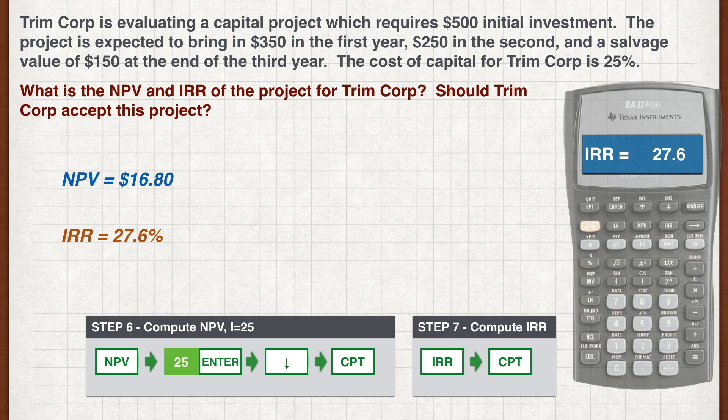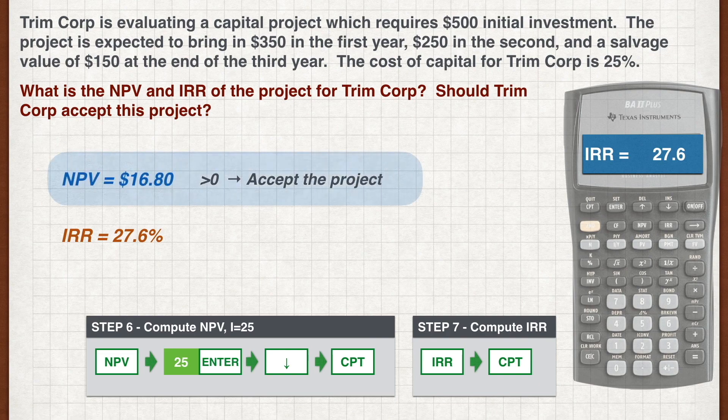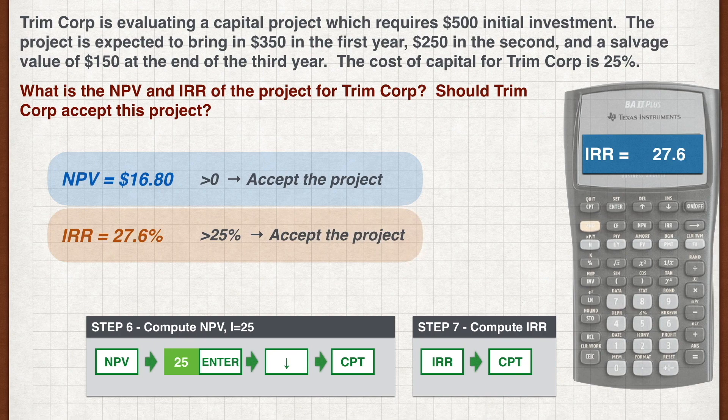To decide whether to accept or reject the project in this case, both NPV and IRR will lead you to the same conclusion. NPV is positive, so we accept the project. Likewise, since the cost of capital for Trimcorp is lower than the IRR, we accept the project.